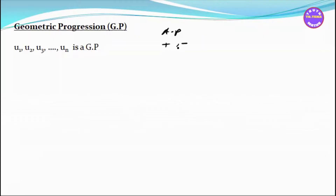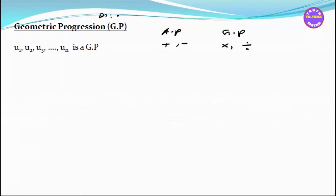Now, in the GP — Geometric Progression — we have a common ratio. The sequence goes from 1 to 9, with summation starting from zero. In the AP we have a common difference, and in the GP we have a common ratio, which gives us a sequence u1, u2, u3, u4, and so on.